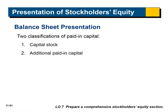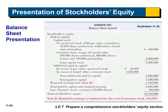On the balance sheet, the stockholders' equity section has two main classifications: capital stock and additional paid-in capital. You'll see capital stock, additional paid-in capital, retained earnings, and then treasury stock is subtracted. This gives you an example of what the whole stockholders' equity section looks like.